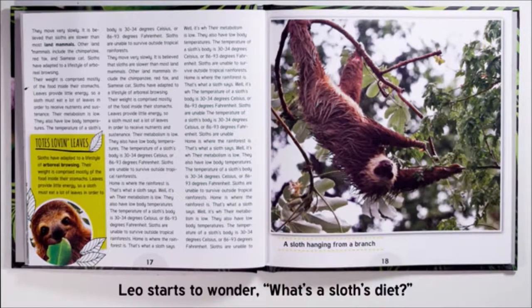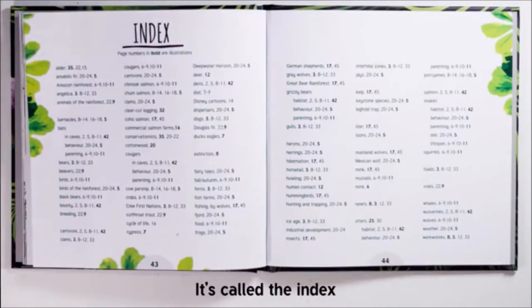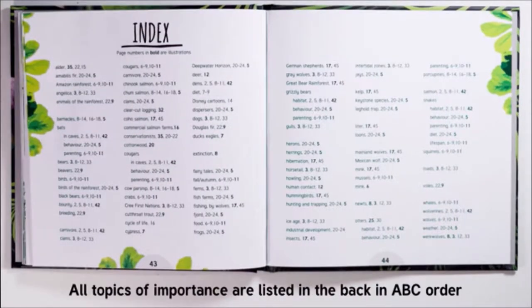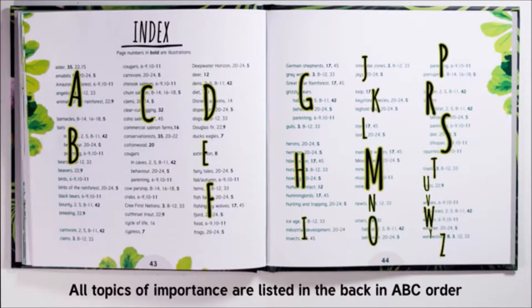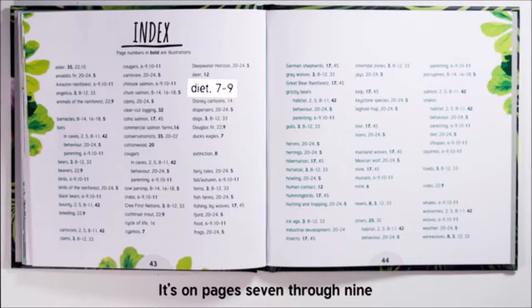Leo starts to wonder what's a sloth diet. There's a text feature that'll help him find it. It's called the index. All topics of importance are listed in the back in ABC order. Leo spots diet that was easier to find. It's on pages seven through nine.